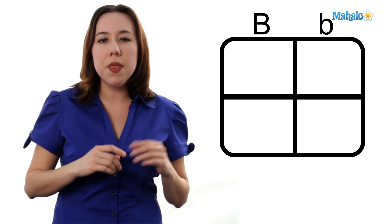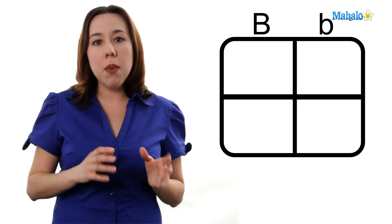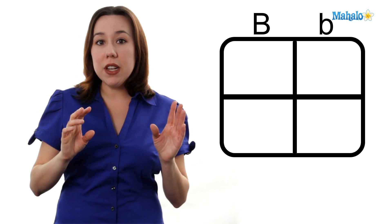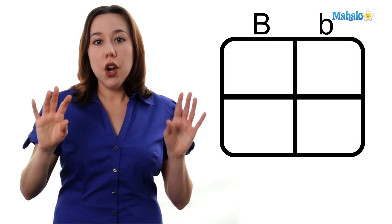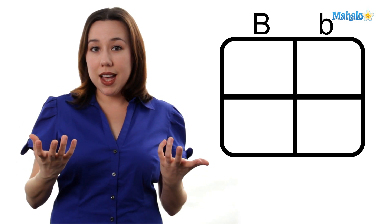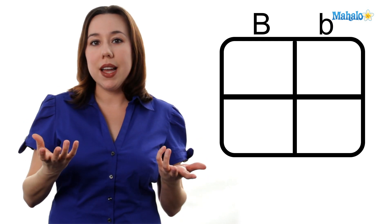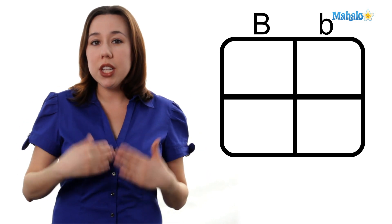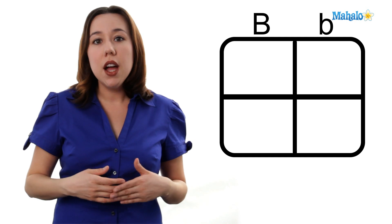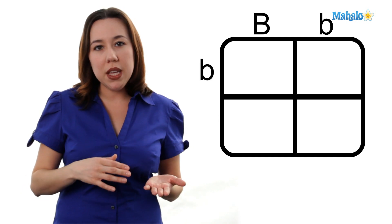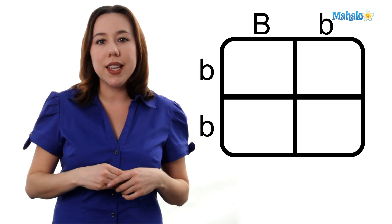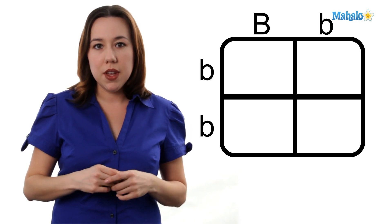What about the mom? The mom has blue eyes, so phenotypically, her expression that you see on the outside is blue eyes. Her genotype, or the genes at play, are going to be little b, little b, or homozygous recessive.